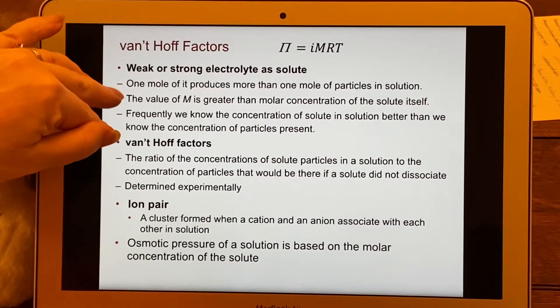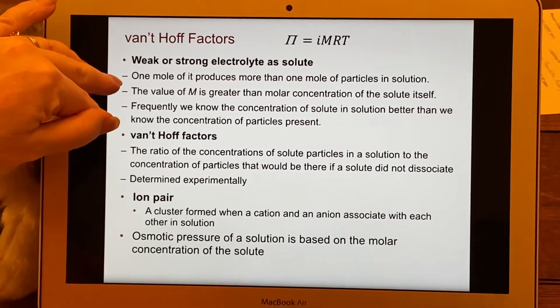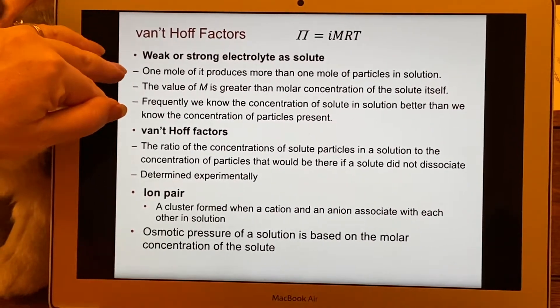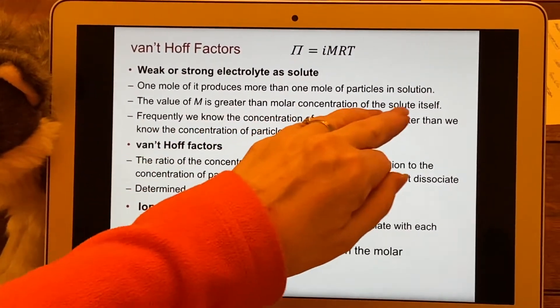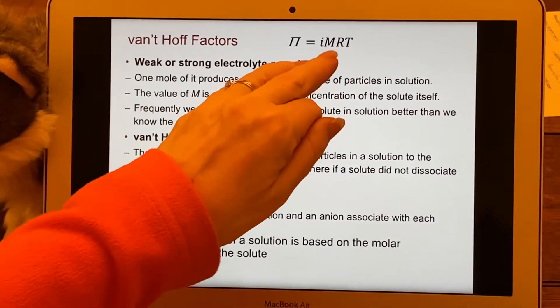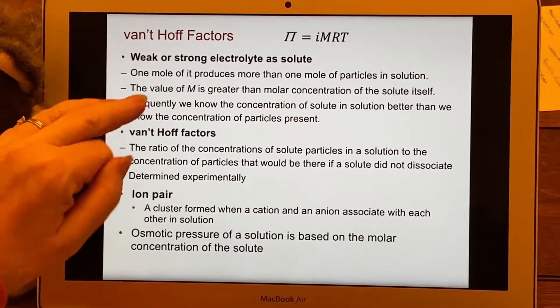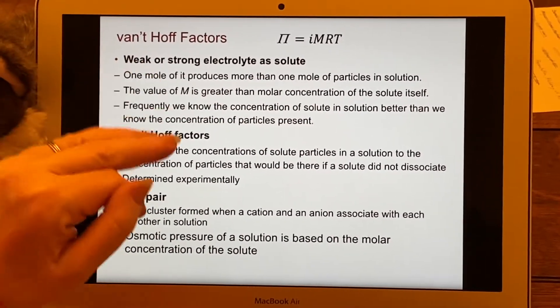The only way that can happen is if these things have come apart. The value of M should be greater than the molar concentration of the solute, and so we use i as a proxy to take care of that problem.